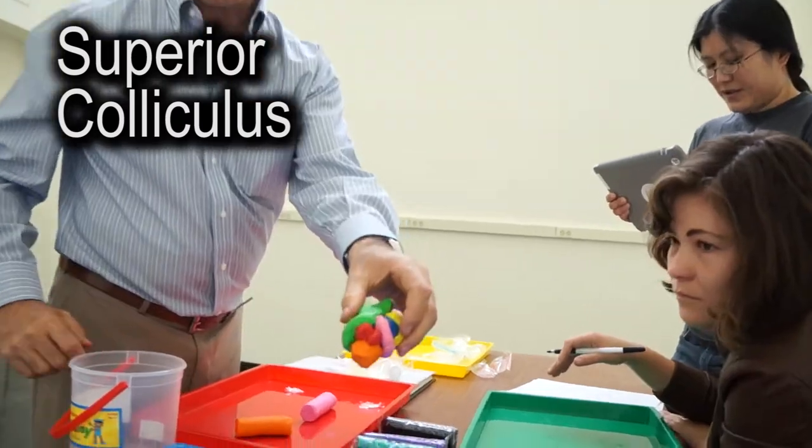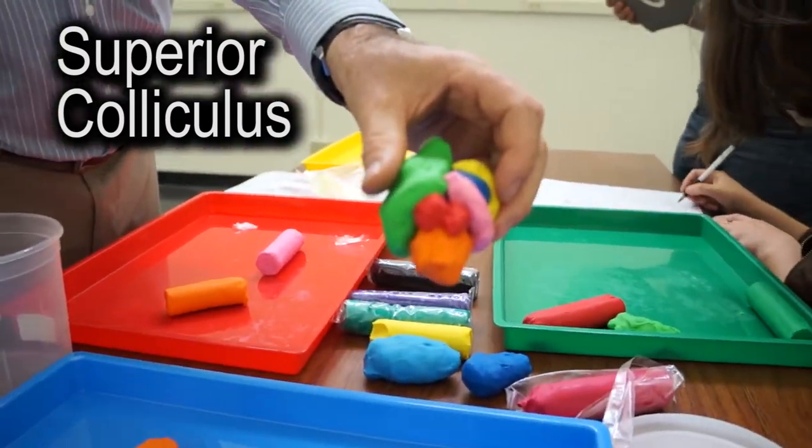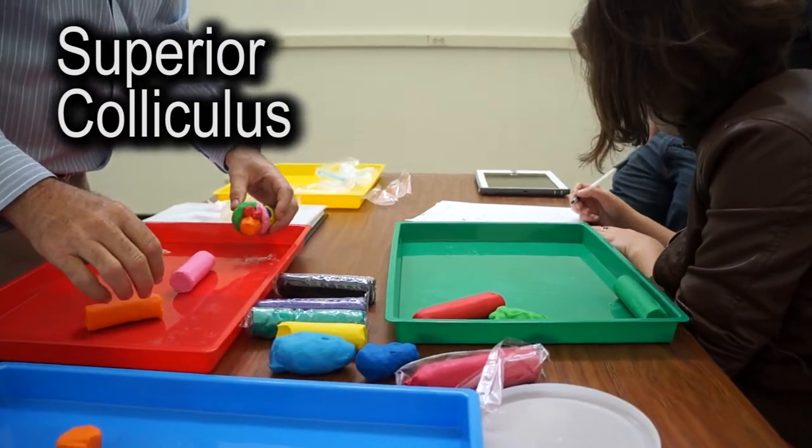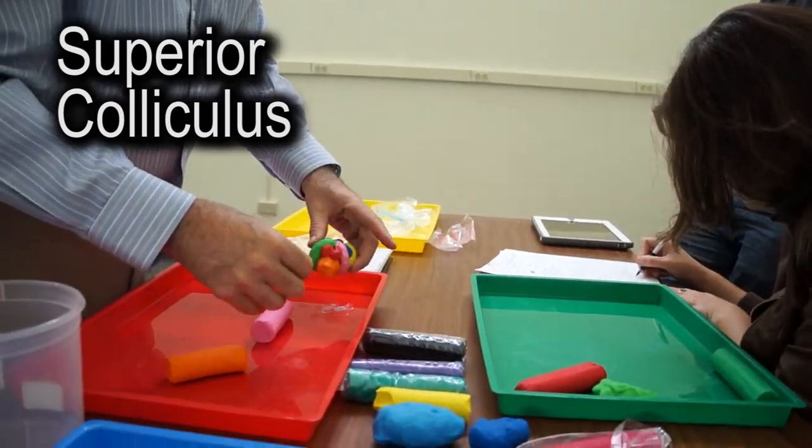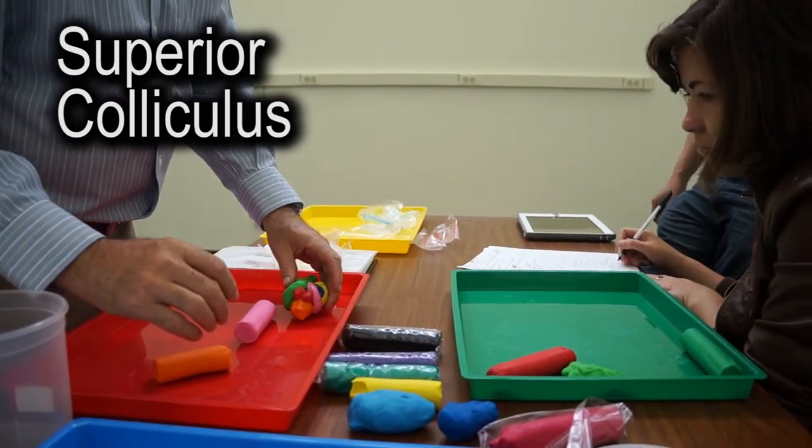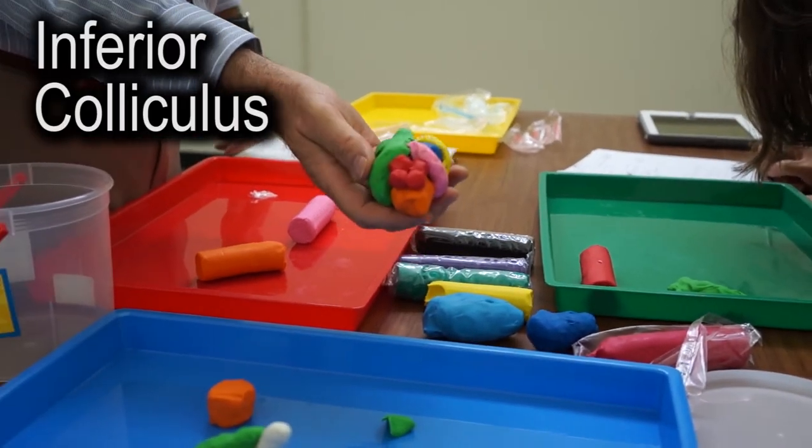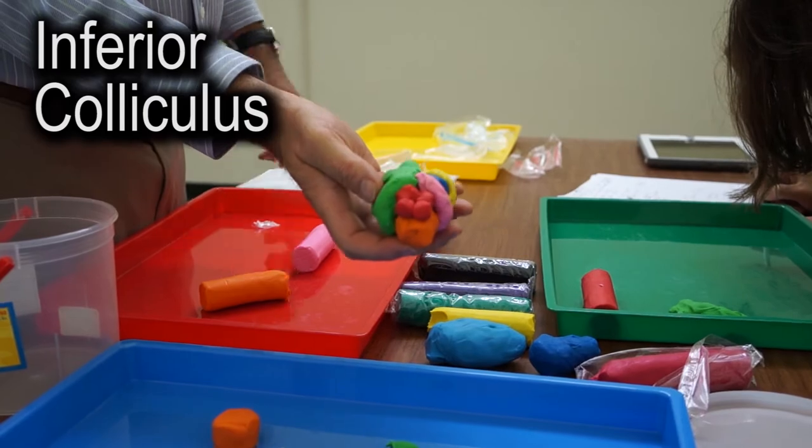Time to make some colliculi. Superior colliculi. So the superior colliculi and then we need to do the inferior, which are going to be right below that, and they sit on the dorsal end of the midbrain. Four little bumps, four bumps representing the superior and inferior colliculi.